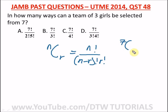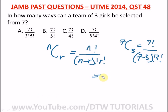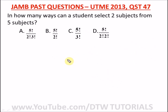Here we're selecting three girls from seven, so we have 7 combination 3, which gives us 7 factorial over (7 minus 3) factorial times 3 factorial — that is, 7 factorial over 4 factorial times 3 factorial. Our right option here is option D.